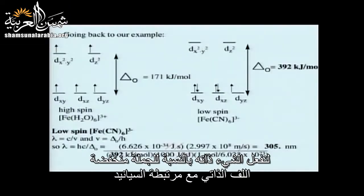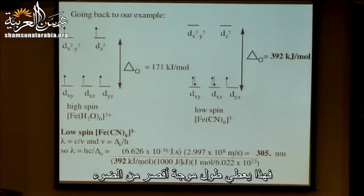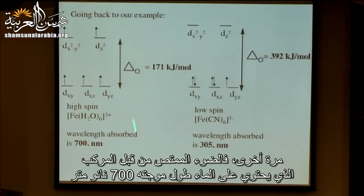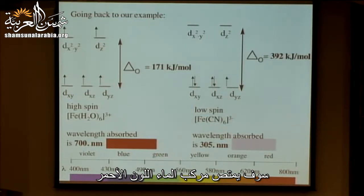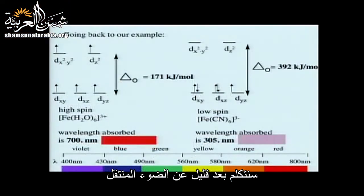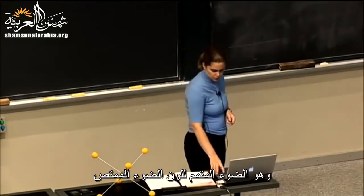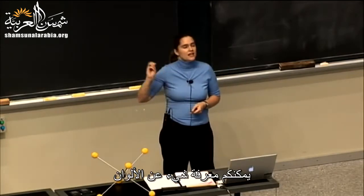For the low spin cyanide system, we plug in 392 kJ/mol and get 305 nanometers. Light absorbed for the compound with water is 700 nm, and for iron with cyanide it's 305 nm — so we're absorbing red light with the water compound, and sort of a purple or violet light is absorbed in the cyanide complex. The color of the transmitted light is complementary to the color of the absorbed light.